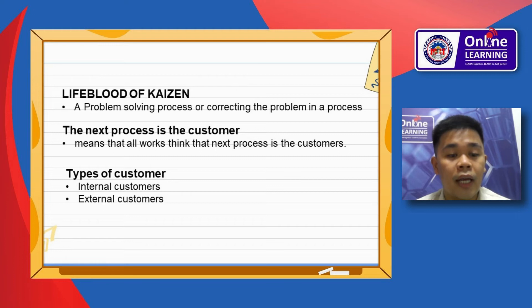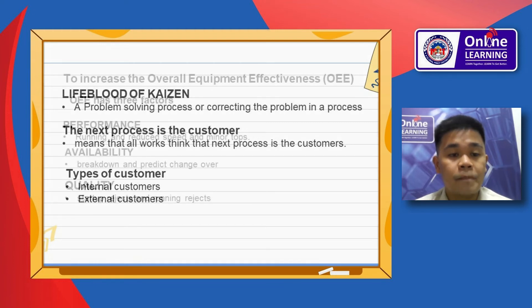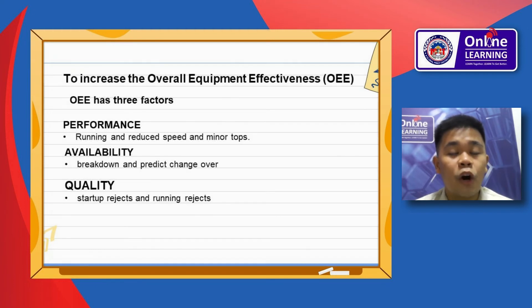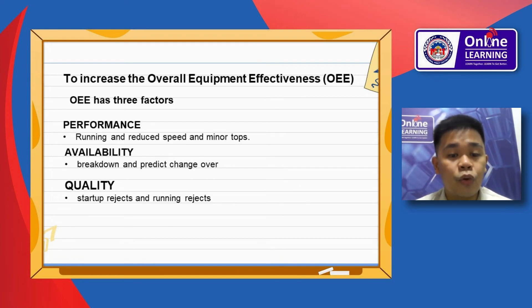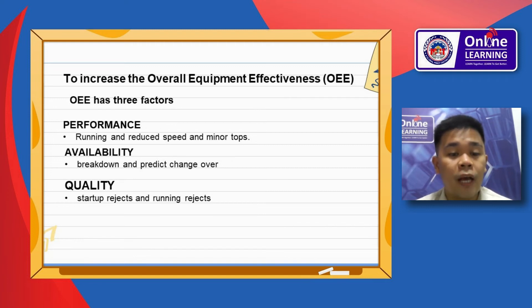To increase the Overall Equipment Effectiveness, or OEE, there are three components: Performance, which includes running speed and minor stoppages; Availability, which covers breakdowns and planned changeovers; and Quality, which addresses startup rejects and running rejects.